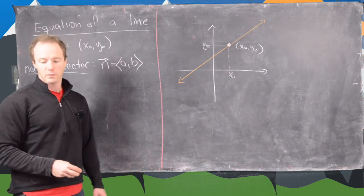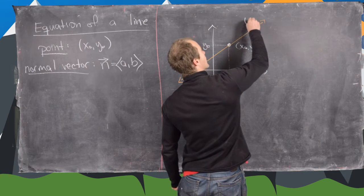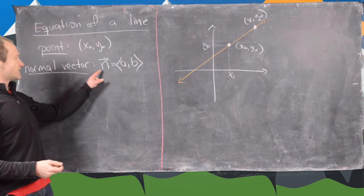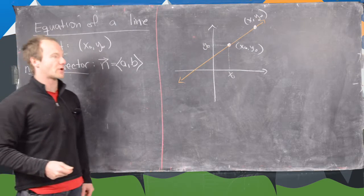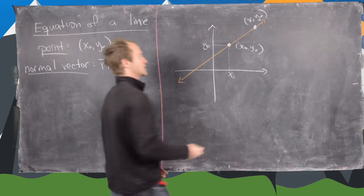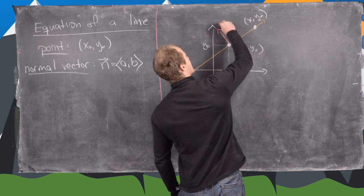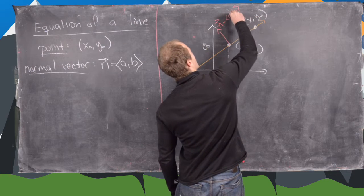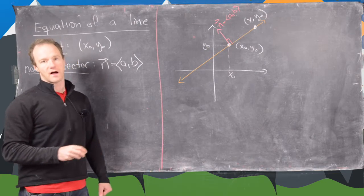What we want to do is find some formula for another arbitrary point on this line using the fact that we know this vector n, which is a, b, is perpendicular to this line. So let's sketch n in this picture. Let's say this is our vector n. Notice I'm drawing it so that it is orthogonal or perpendicular to our line — another word for that is normal to the line.